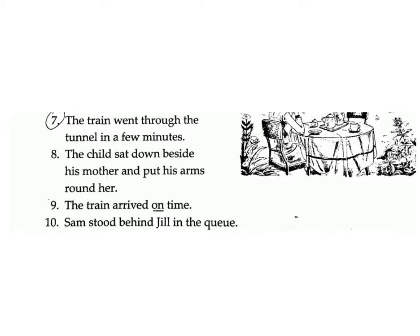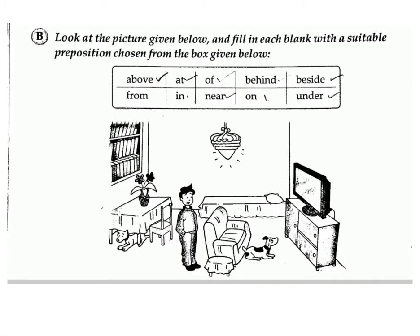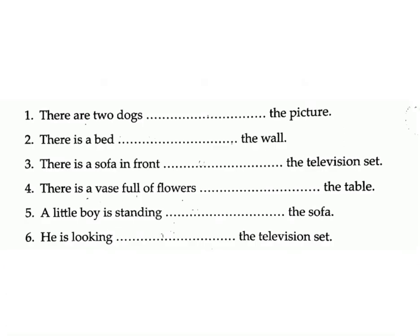Sentence 10: Sam stood behind Jill in the queue. Answer: behind, in. Exercise B: Look at the picture given below and fill in each blank with a suitable preposition chosen from the box given below — above, at, of, behind, beside, from, in, near, on, under. Sentence 1: There are two dogs ___ the picture. Answer: in. Sentence 2: There is a bed ___ the wall. Answer: near.